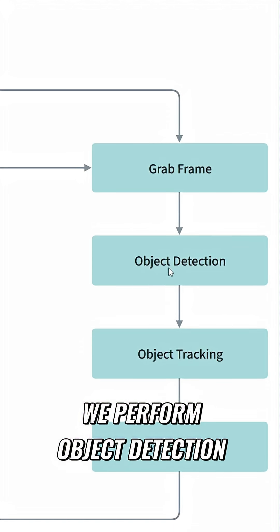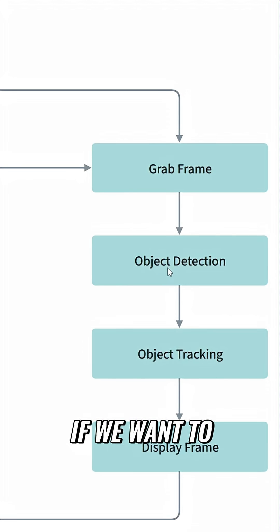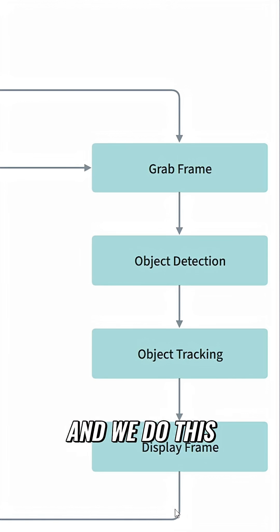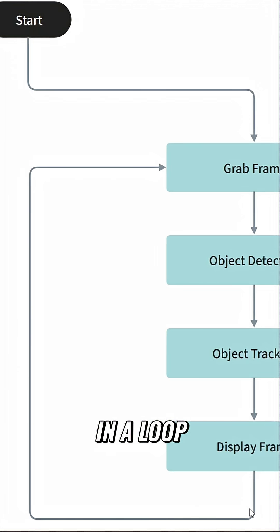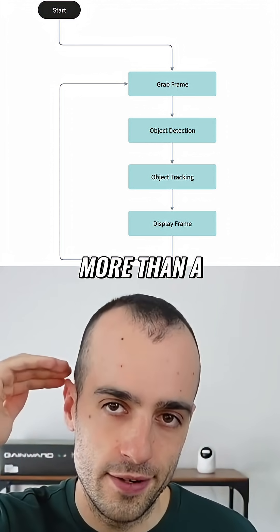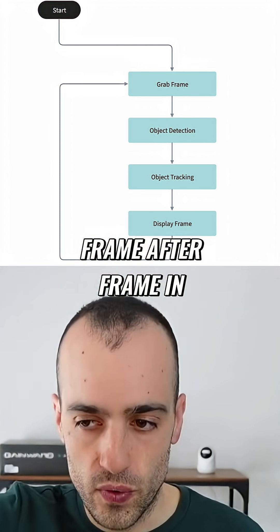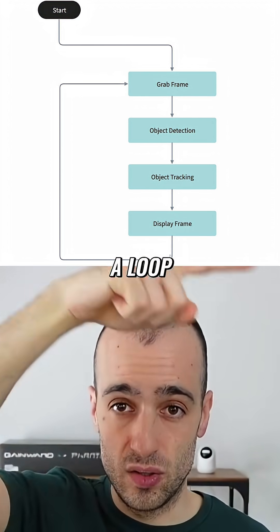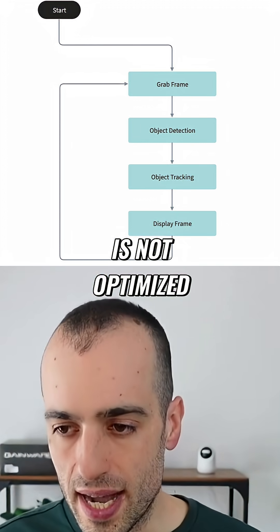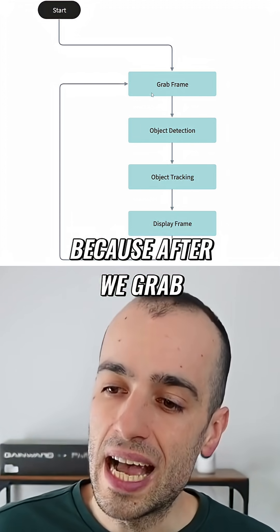If we want, we perform object tracking, we display the frame, and we do this in a loop. It gives us an illusion that it's a video, but a video is nothing more than a frame after frame in a loop. Why is this linear way not optimized?